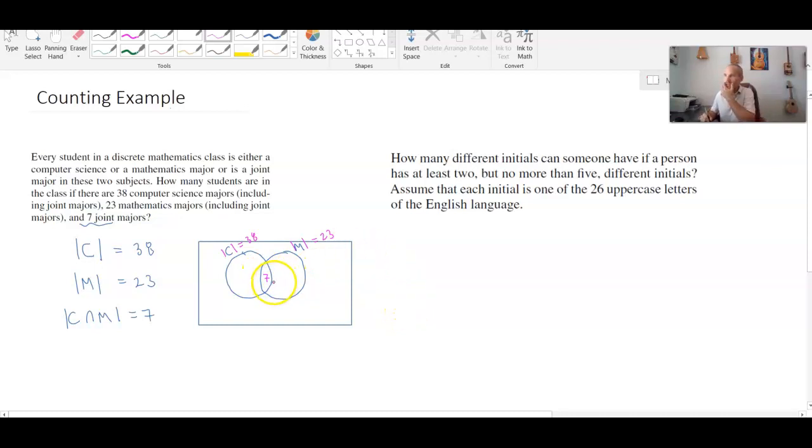So if there are seven elements that they share in common and we want to know how many students are strictly math majors, well 23 of them are math majors in total. Seven of them are majoring in both topics, so that means 23 minus seven or 16 of them are enrolled only as a math major. Same thing goes over here: there are going to be 38 minus 7, or 31 students who are exclusively computer science majors and not math majors.